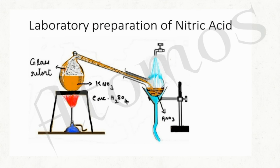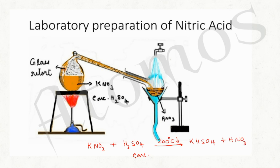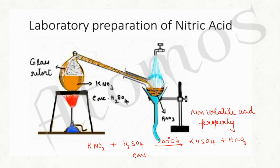To prepare nitric acid in the laboratory, we take either potassium nitrate or sodium nitrate, add concentrated sulfuric acid, and heat the mixture to below 200 degrees Celsius. We get potassium bisulfate along with nitric acid. Hydrochloric acid and nitric acid are not used for this purpose because they are volatile and decompose easily, whereas the boiling point of concentrated sulfuric acid is higher, so it won't decompose easily. The property utilized here is the non-volatile acid property of concentrated sulfuric acid.